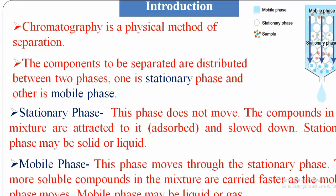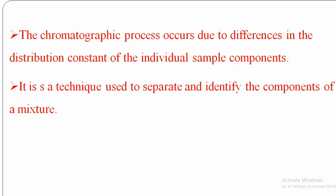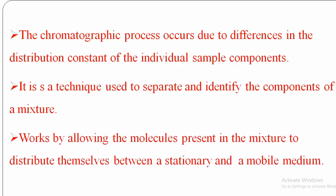The mobile phase moves through the stationary phase. More soluble compounds in the mixture are carried faster as the mobile phase moves. The mobile phase may be liquid or gas. The chromatographic process occurs due to differences in the distribution constant of the individual sample components. It is a technique used to separate and identify the components of a mixture, by allowing molecules to distribute themselves between the stationary and mobile media.